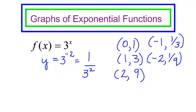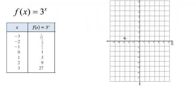Let's plot a few of these points. When I plugged in negative 3, I got 1/27. Negative 2 gives 1/9. Negative 1 gives 1/3. When I plugged in 0 — this is an important point — I got 1. When x was 1, y was 3. When x was 2, the function is 9. You can see this increases very quickly. So I can draw my curve, and that is the graph of y equals 3 to the x.